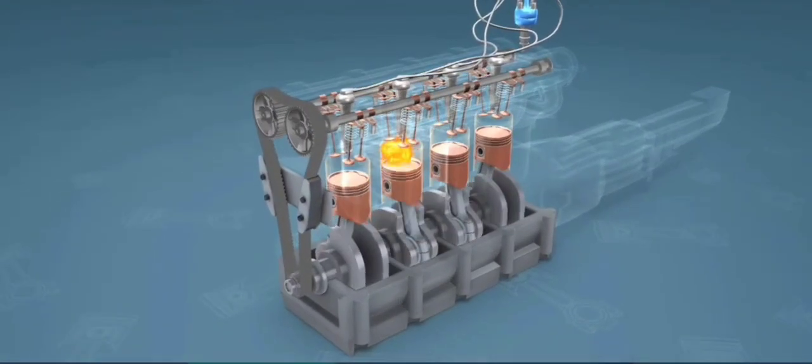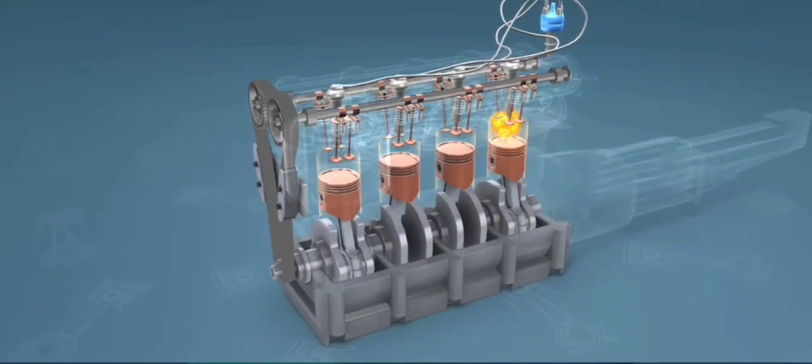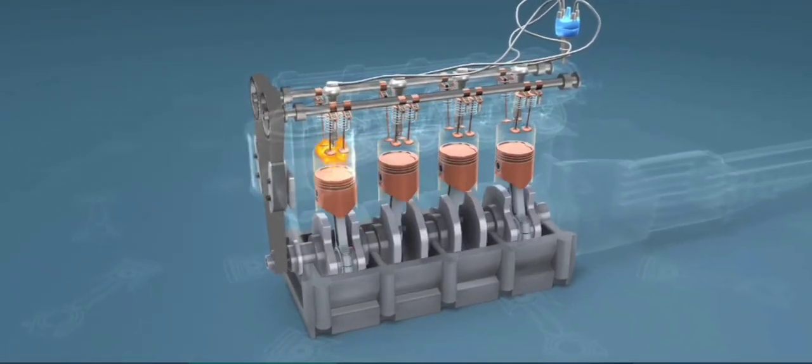By 1876, Otto and Langen succeeded in creating the first internal combustion engine that compressed the fuel mixture prior to combustion, for far higher efficiency than any engine created to this time.